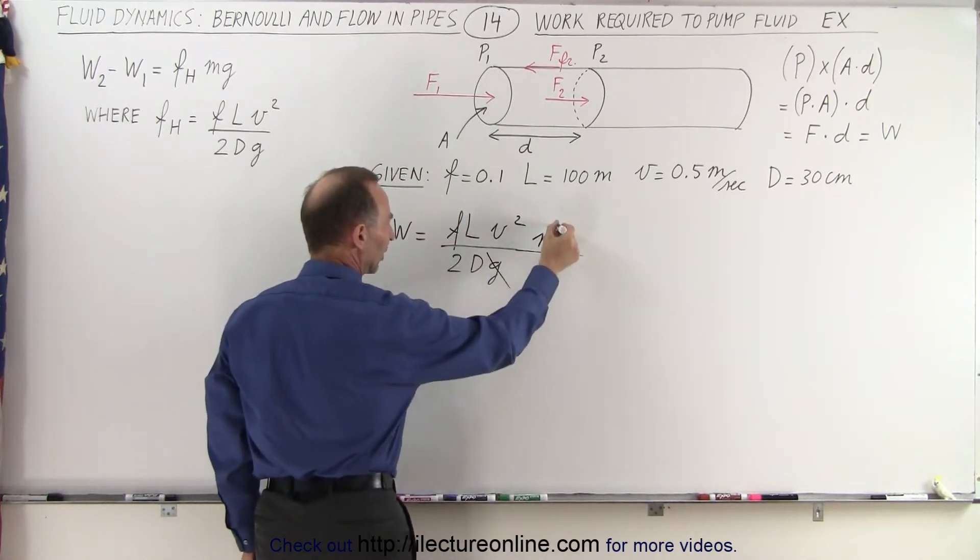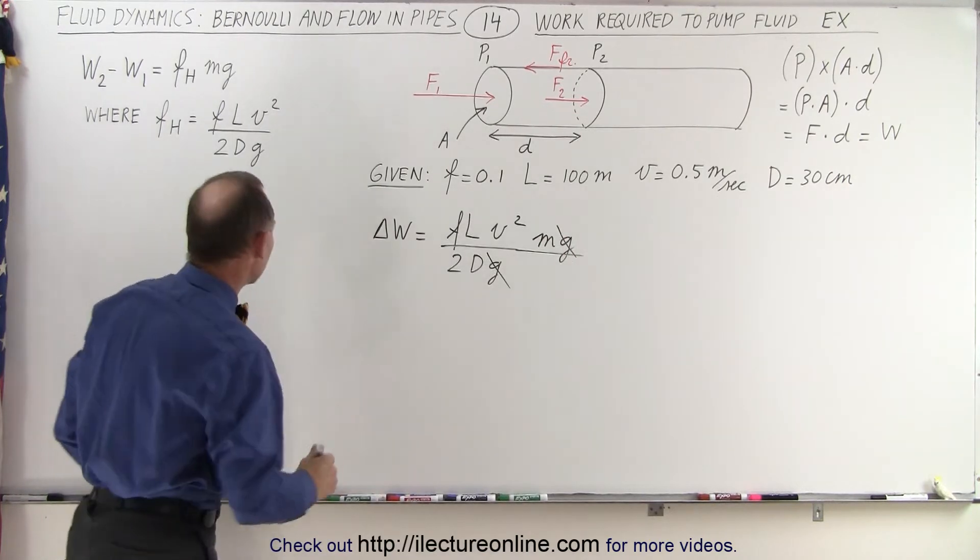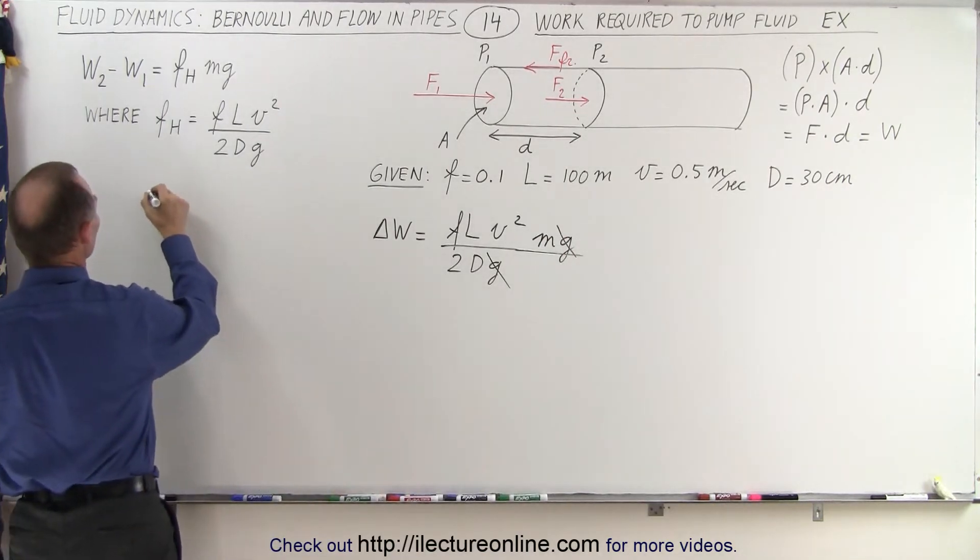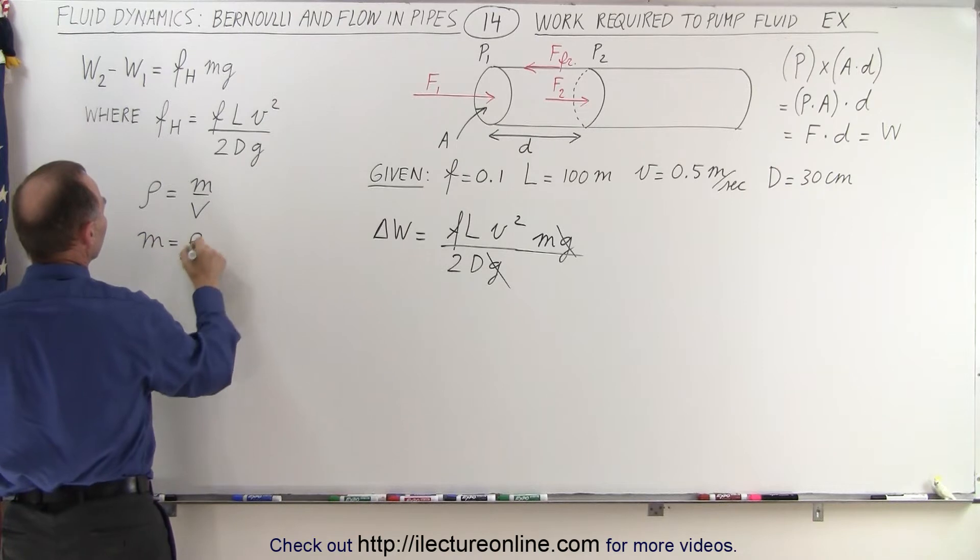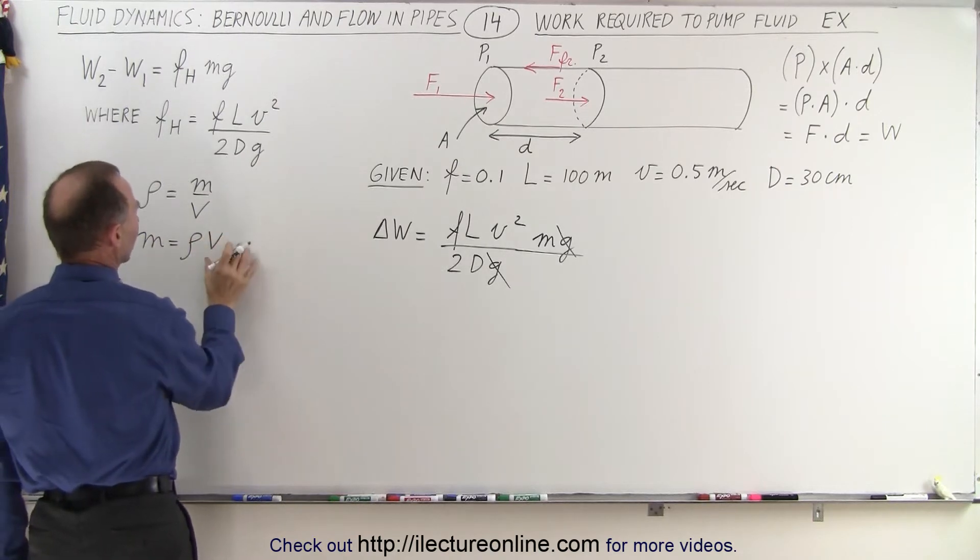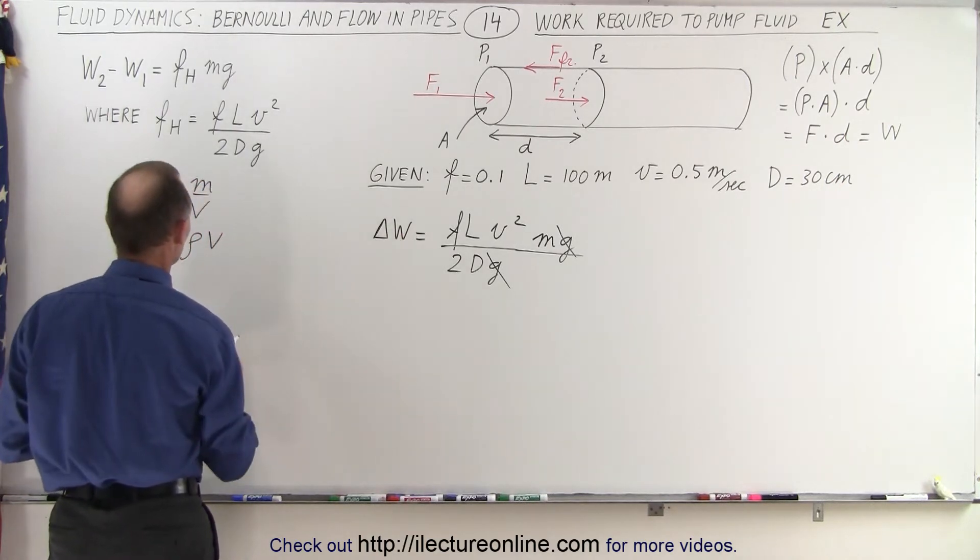Of course, right away we can see that G's cancel out, but how do we express the mass of that water? Remember, the definition of the density is equal to the mass divided by the volume, so the mass is equal to the density times the volume, and the volume of course can be expressed in terms of the cross-sectional area times the distance, or the length.